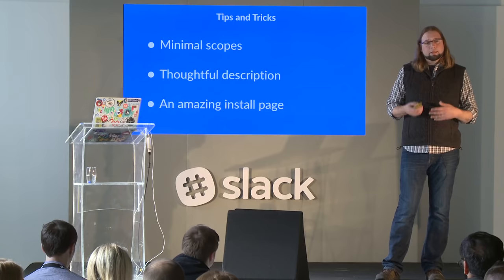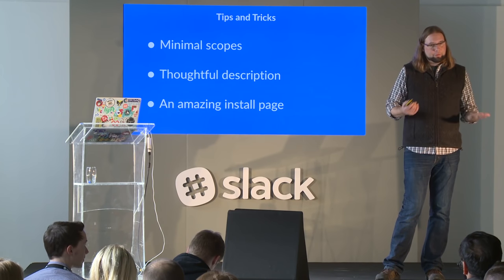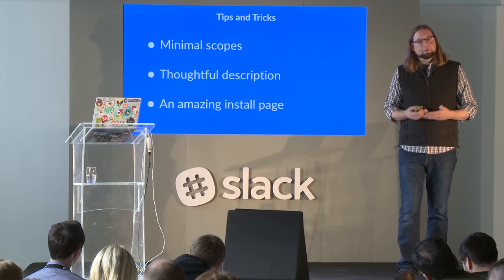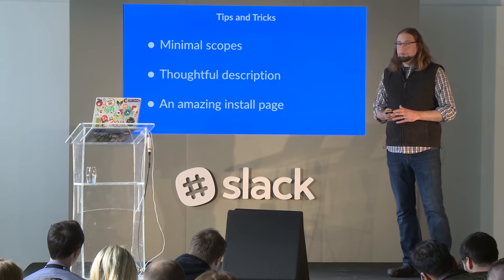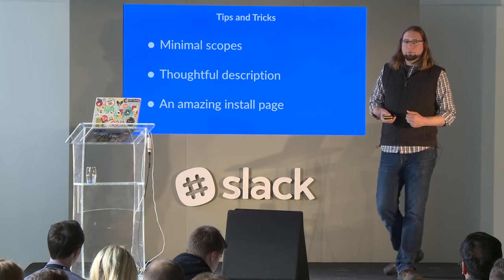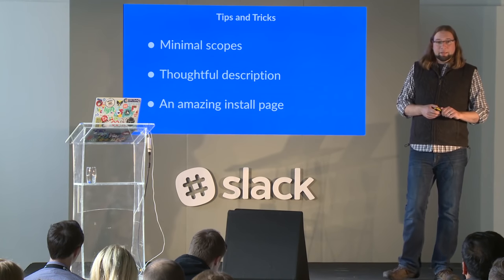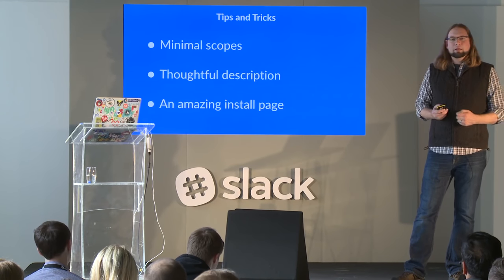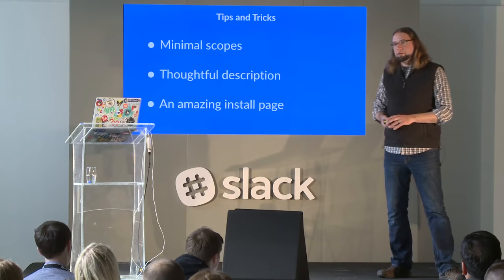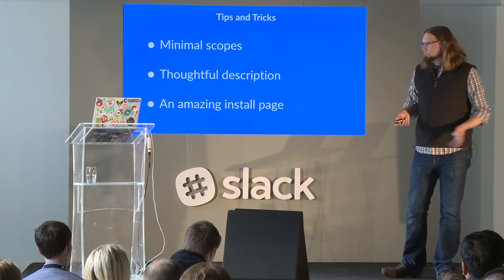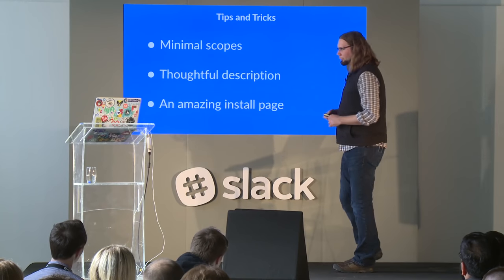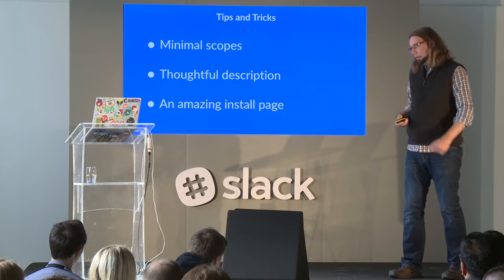A thoughtful description is certainly a must. When customers visit your app page, you have your first chance to engage with them through the app description. You should say what your app does and why the customer would want to install it — all too often people don't do that and you wonder what the app is even for. By building an amazing install page, that's your big chance to communicate with them. When they hit the install link, we take them back to your site where you can use rich media, explainer videos, or whatever you think is necessary to best communicate the value of your app. These things are really key parts of seeing success and being listed in the app directory.